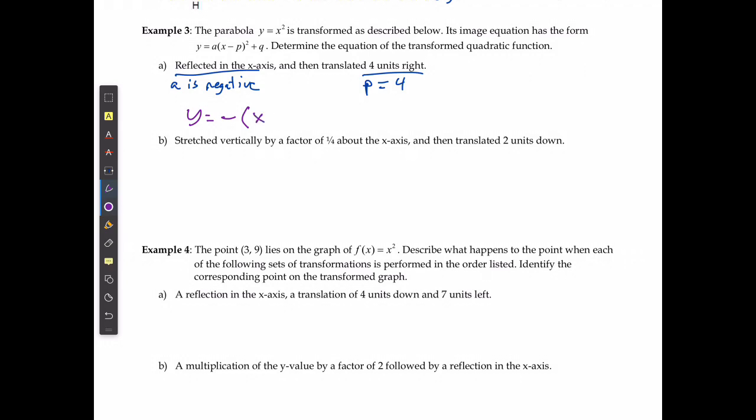x minus p, we said p is 4, squared. And it doesn't say anything about a vertical translation, which means q is just going to be 0 and I'm not going to include it.